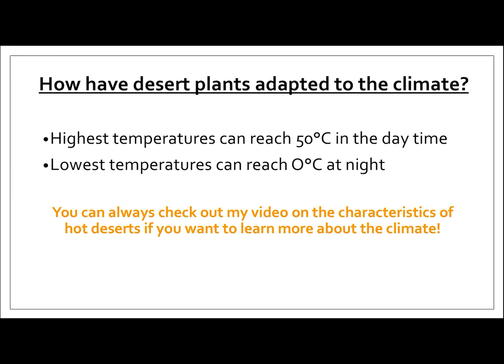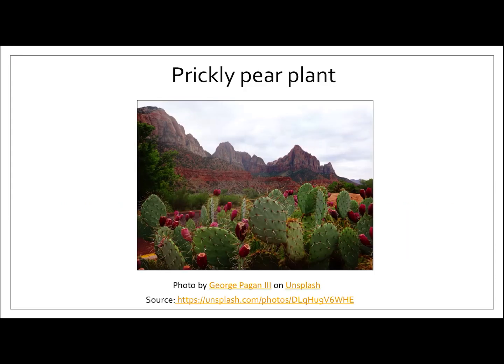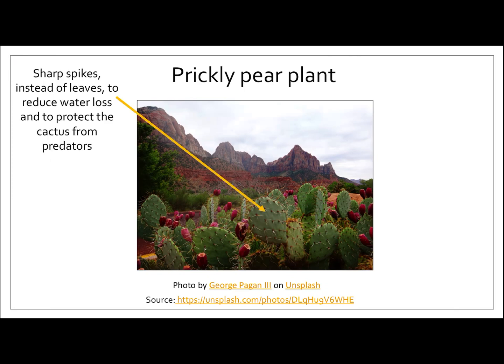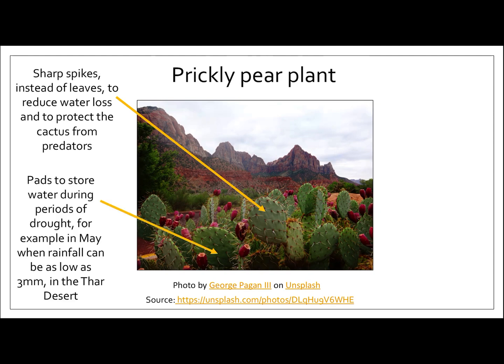If you want a little reminder about the climate in the desert, you can click on the link and watch one of my other videos on the channel. We're now going to look at the prickly pear plant and how it has adapted. Firstly, it's got sharp spikes instead of leaves. These help to reduce water loss and to protect the cactus from predators so that they don't get eaten.